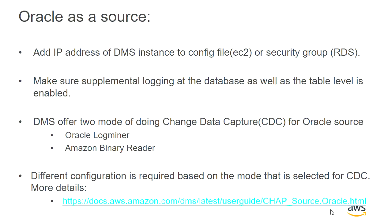DMS offers two ways to do change data capture for Oracle: Oracle LogMiner, which uses Oracle's native API and queries logs using database CPU and resources, and Amazon Binary Reader, which operates at the operating system level — taking logs, moving them to the DMS replication instance, and reading changes there. Amazon Binary Reader is developed by AWS; Oracle LogMiner uses Oracle's native APIs.